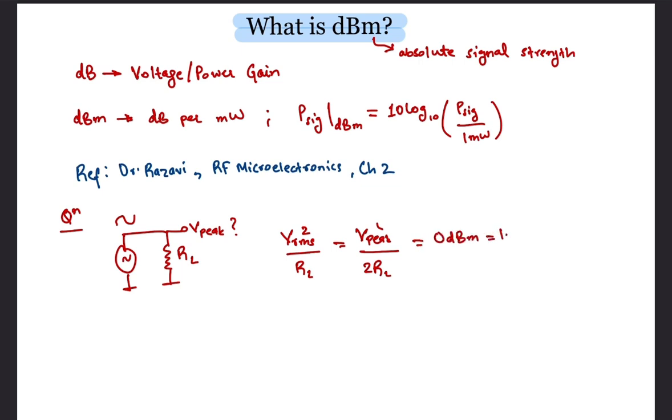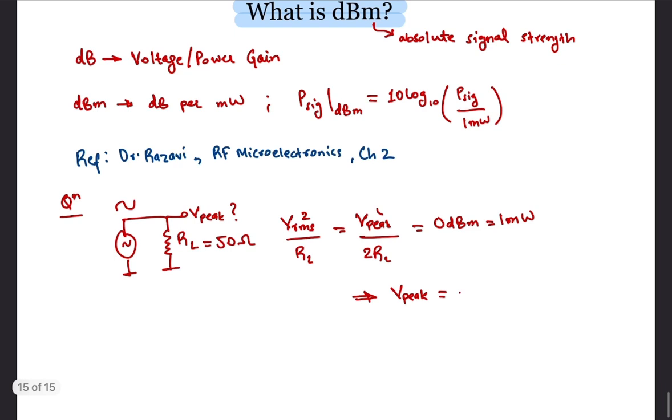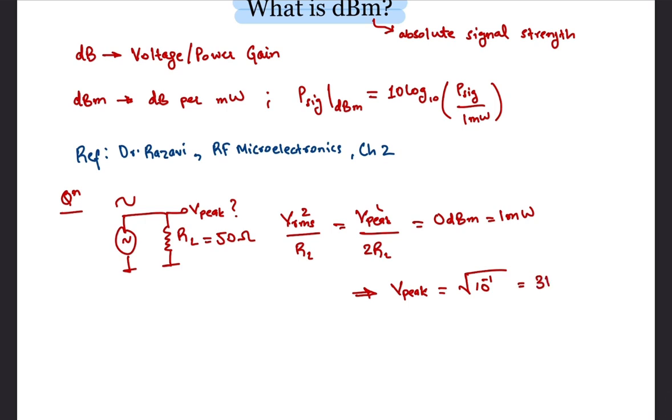Since 0 dBm is 1 milliwatt we can evaluate the amplitude to be equal to approximately 316 millivolts. This is a useful result which approximately holds true for even narrow band signals.